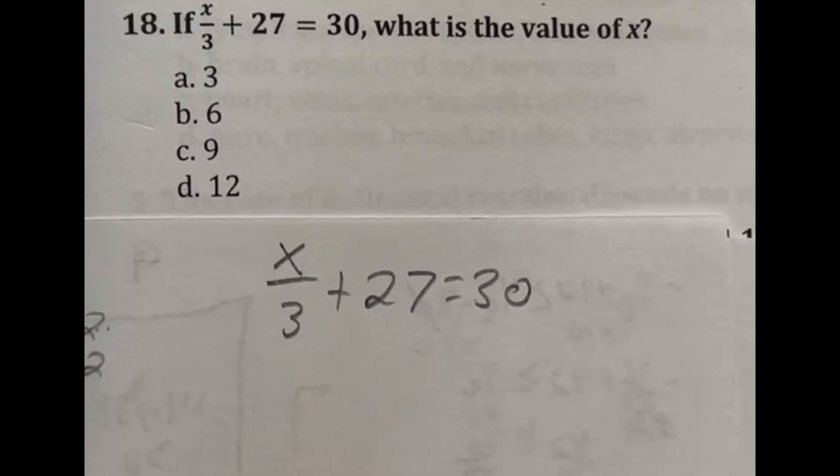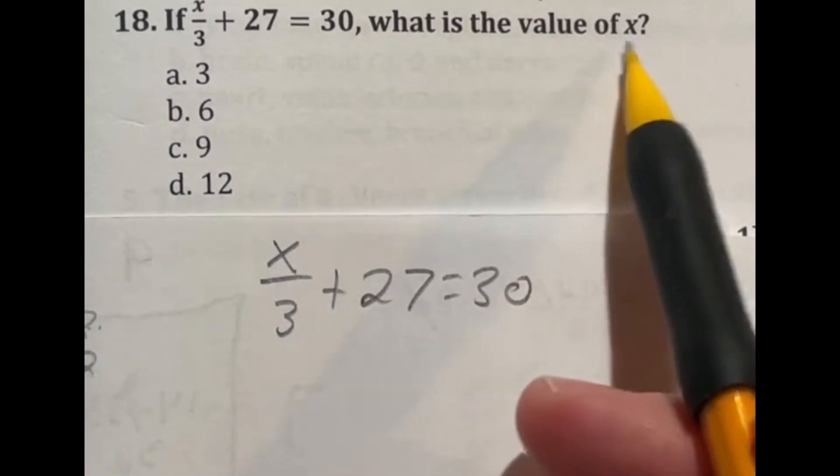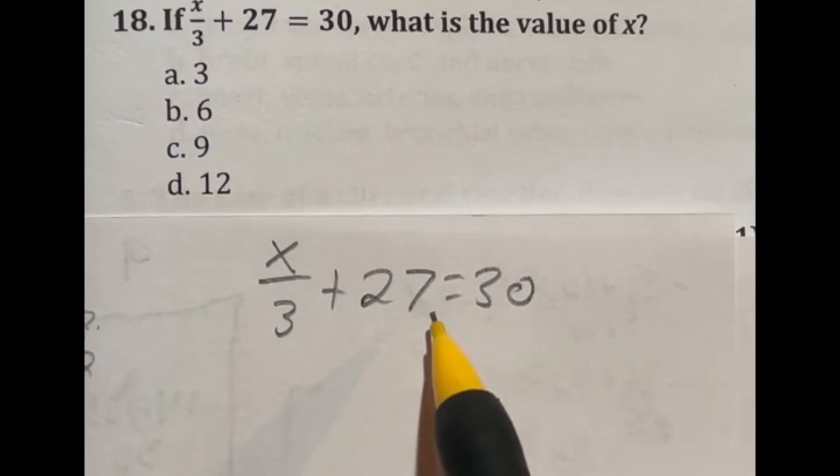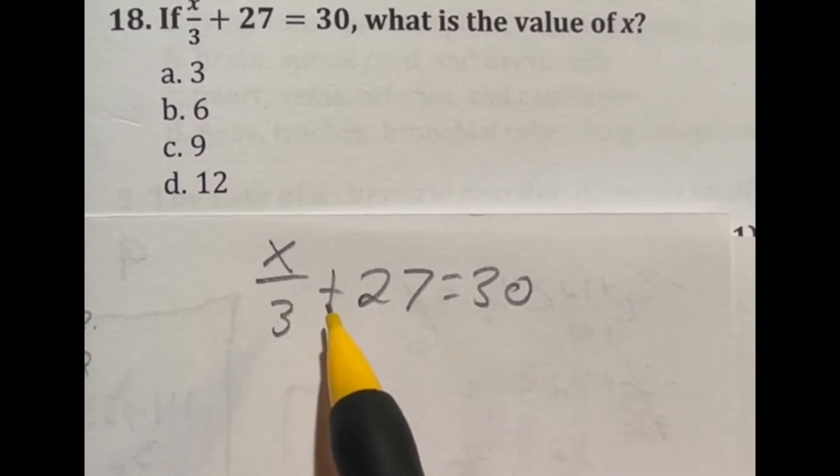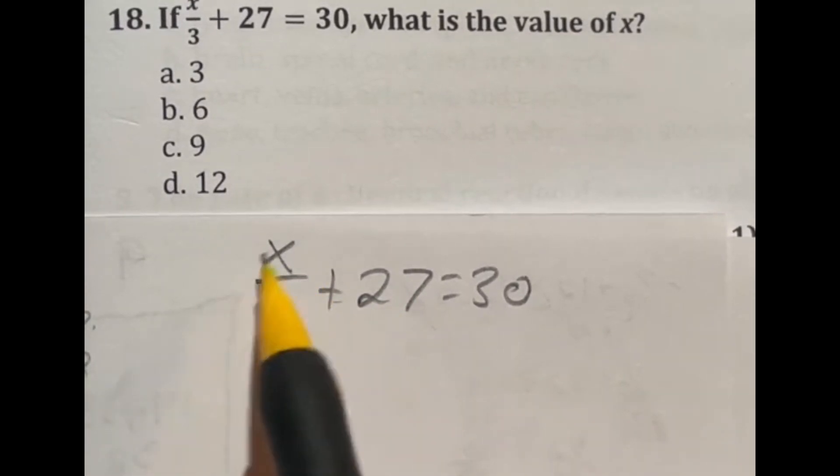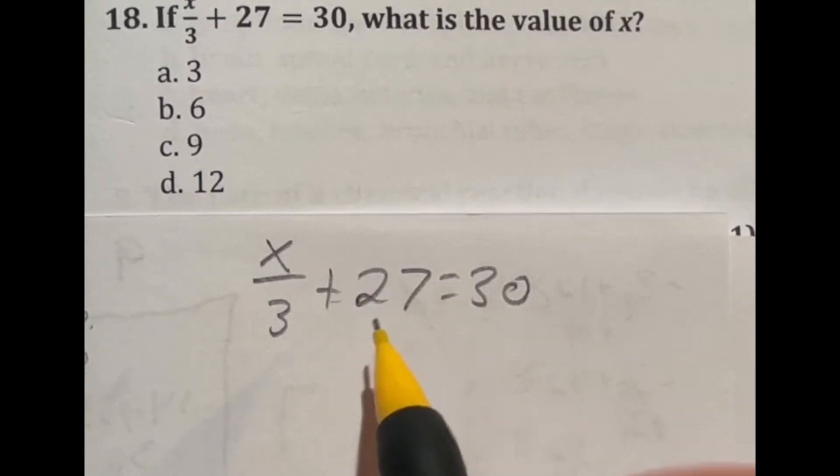Number 18 says if x over three plus 27 is equal to 30, what is the value of x? So this is essentially a two step problem, just solving some basic algebra here. Our first step is the opposite of adding this 27. Usually if you have a number attached to the x by multiplication or division, that's always the second step. The first thing you want to do is get rid of any easy adding or subtracting you can do right off the bat.